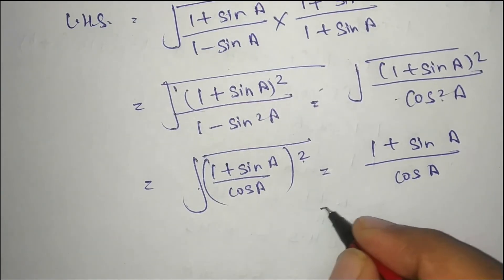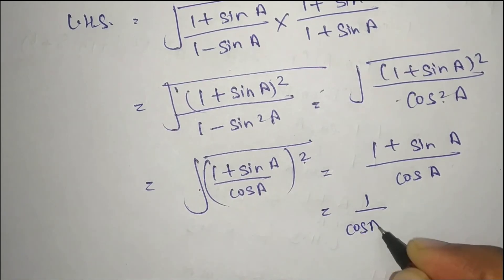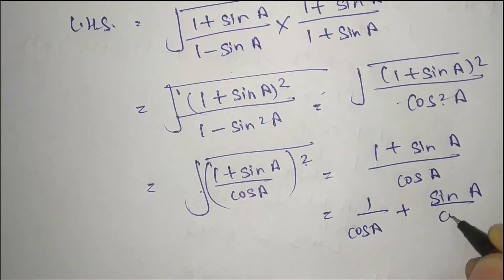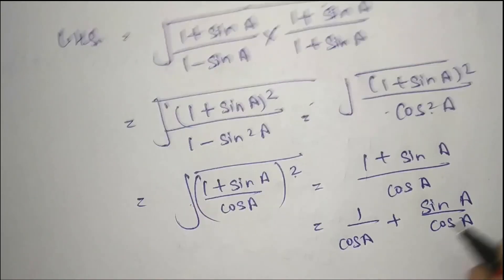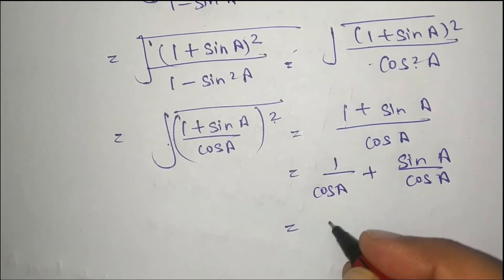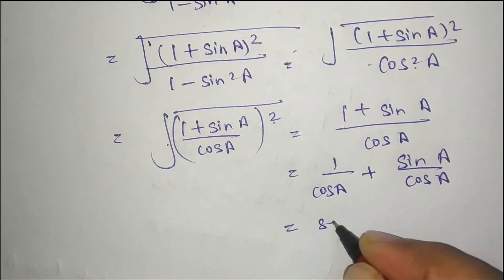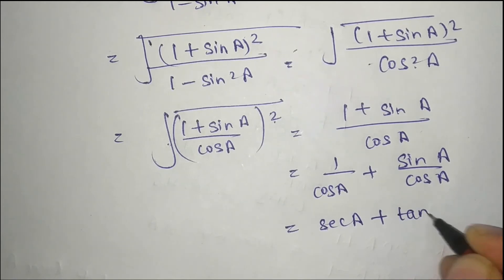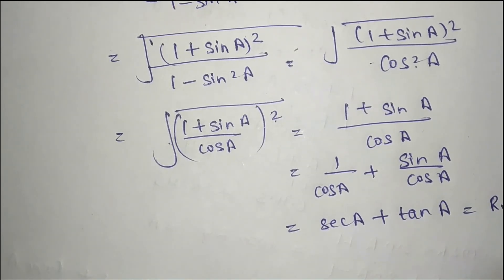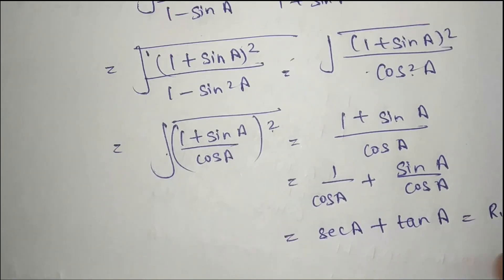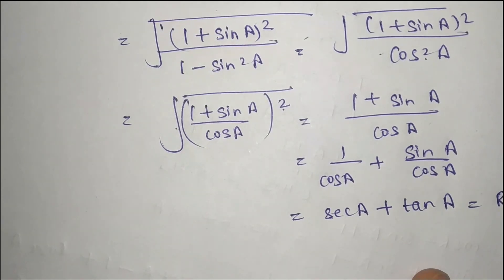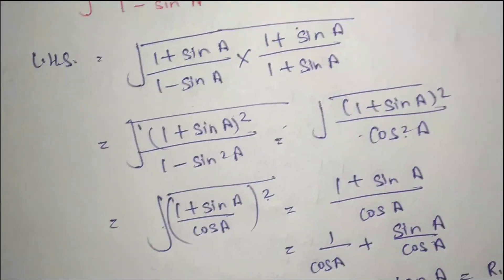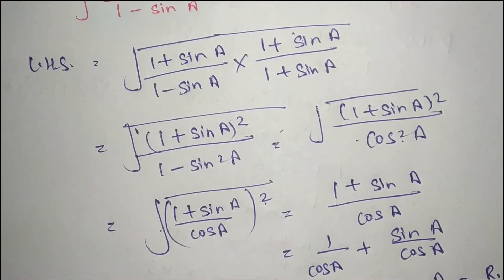So we have (1 + sin a) upon cos a, which we can split as 1 over cos a plus sin a over cos a, which equals sec a plus tan a. So this is our right hand side. In this way you will do this question.